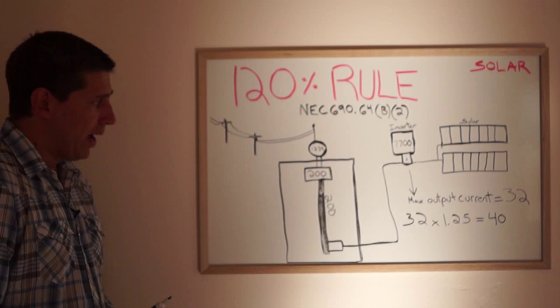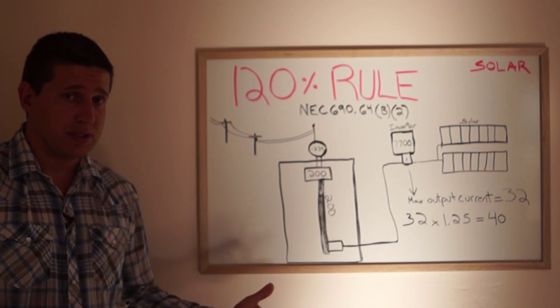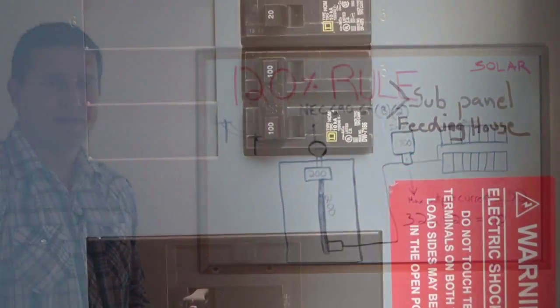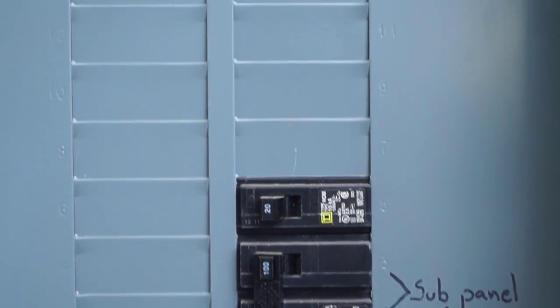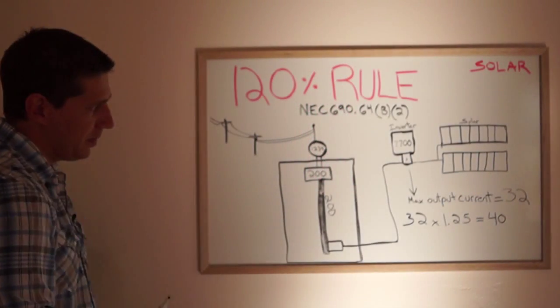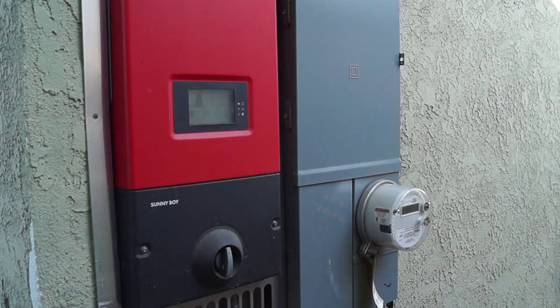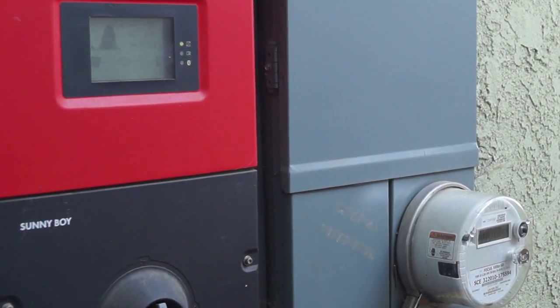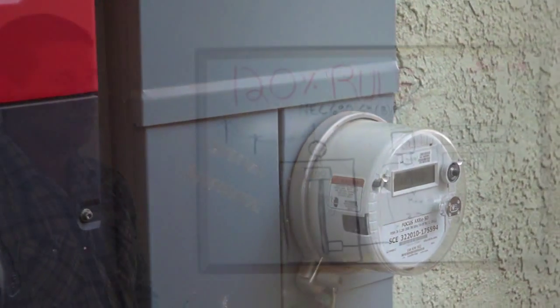Now when you have a solar system installed there's another code that states you have to install it on the opposite end of the bus bar from the main breaker. So here's your solar breaker. It's connected to the inverter and the solar panels. Inverter inverting it to 240 AC, solar coming in a DC high voltage.